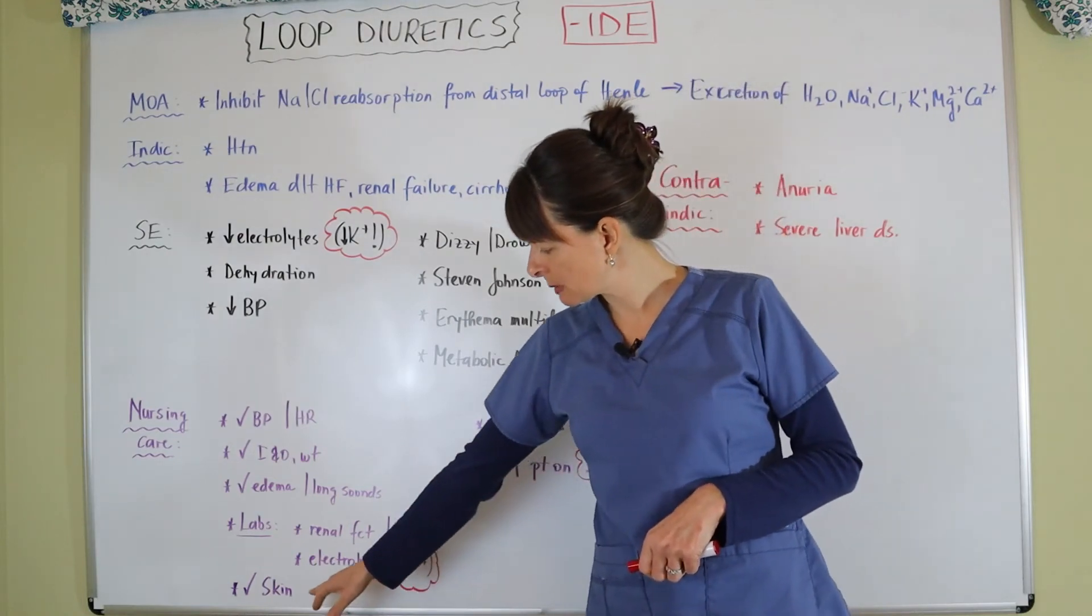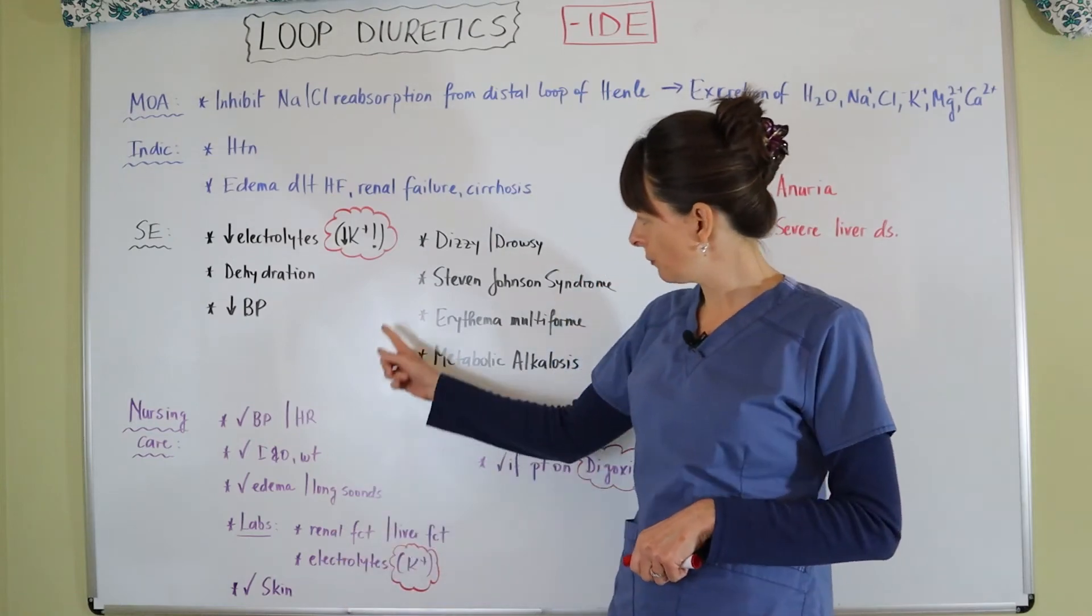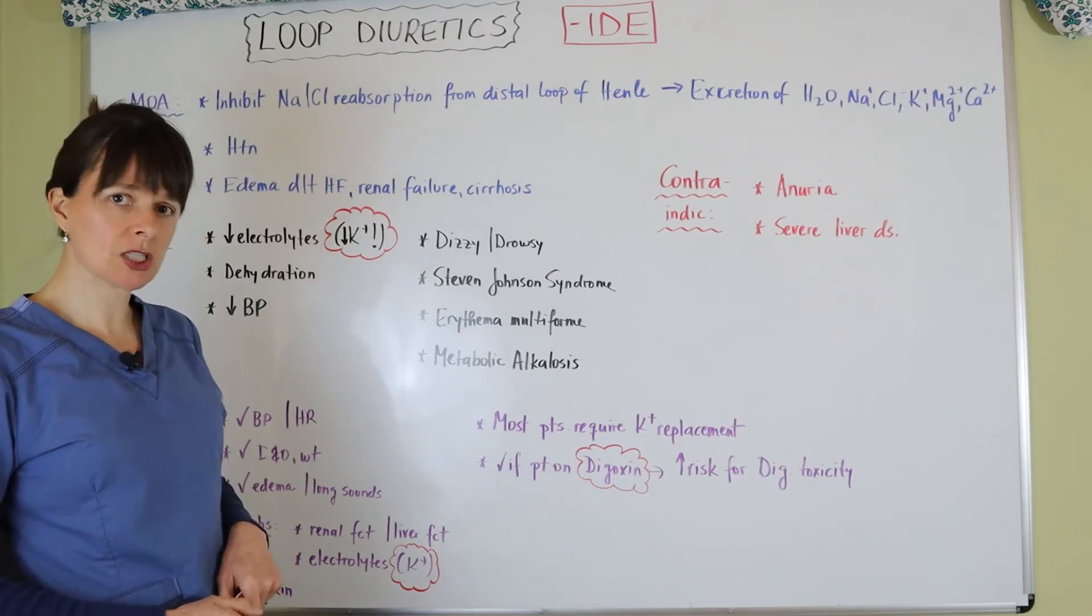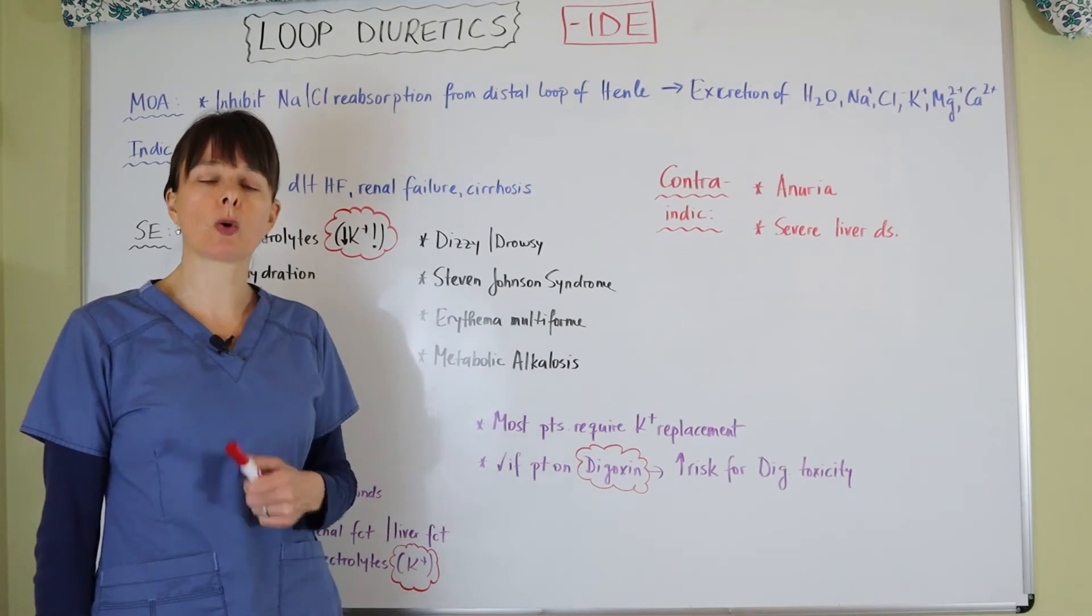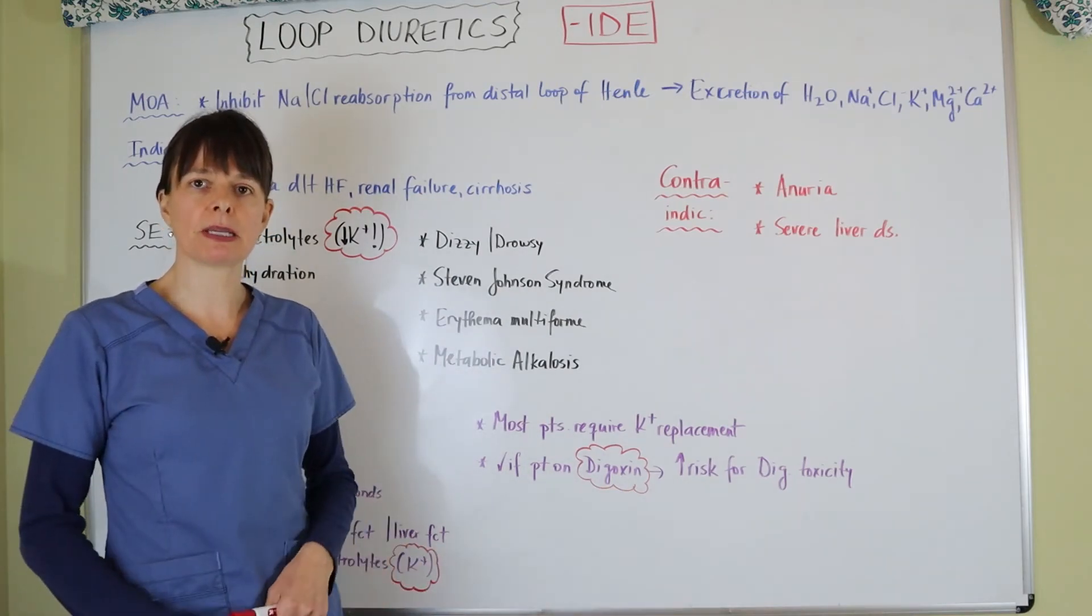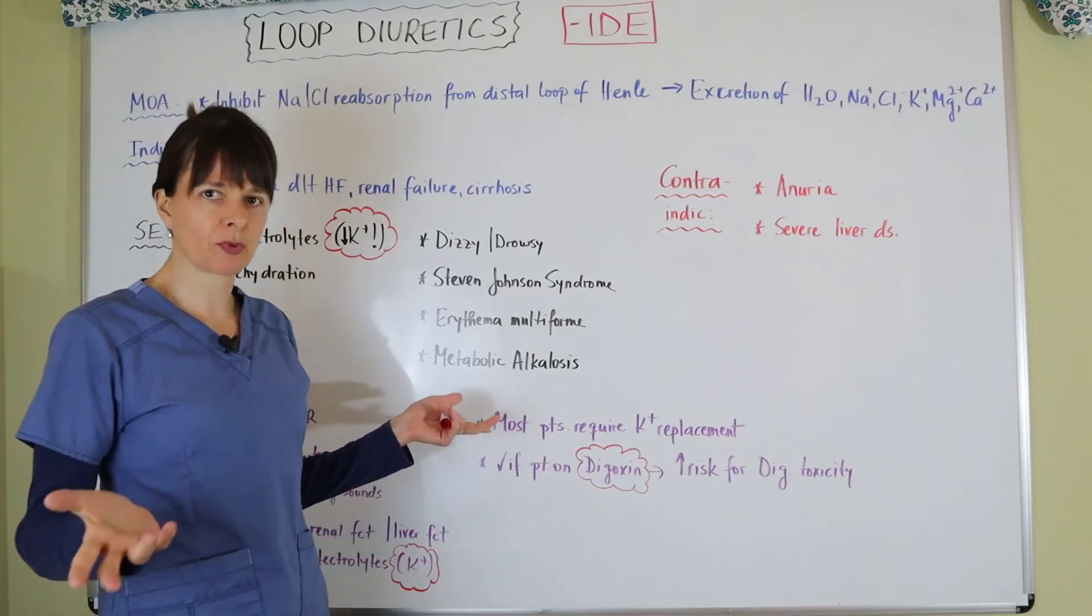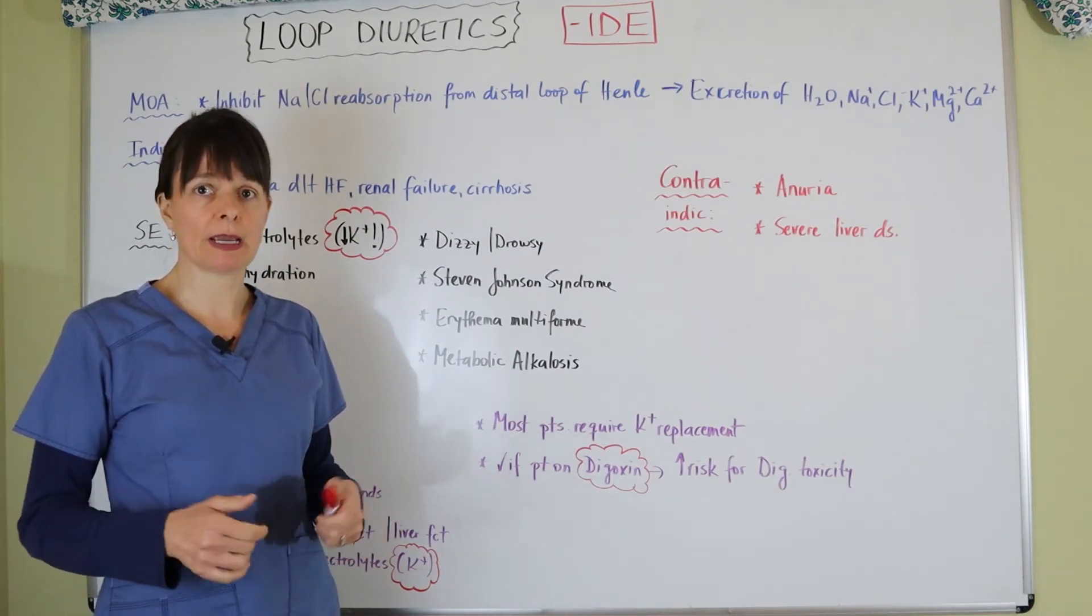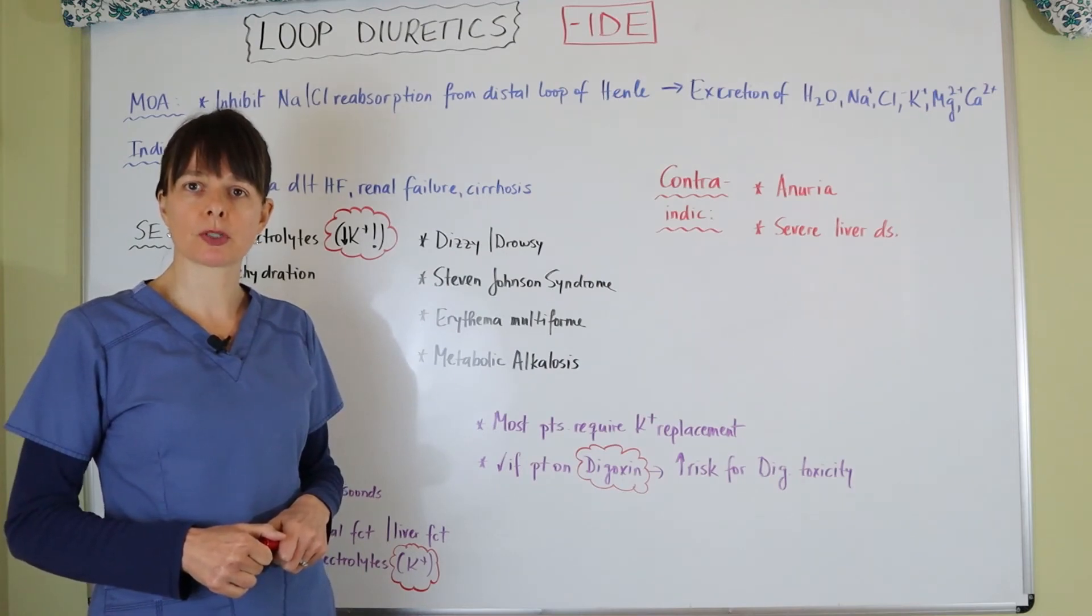And then, especially if the patient is newly on this medication, we want to check their skin for these two side effects we already discussed. Additionally, most patients who are on a loop diuretic will require a potassium replacement because it just gets depleted so quickly. So, it's not uncommon to see your patient on, let's say, Lasix 40 mg Q day and then also to be on potassium chloride 20 MEQs or whatever the provider determines to be the appropriate dosage for the patient.